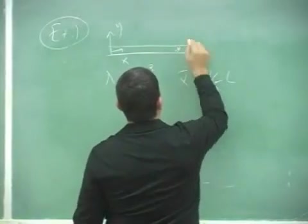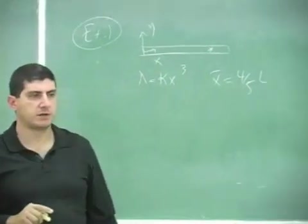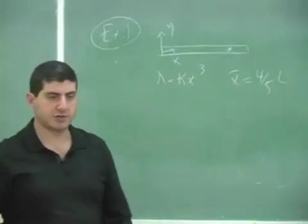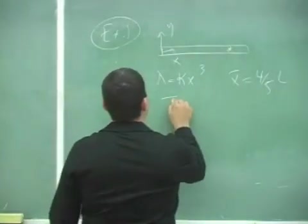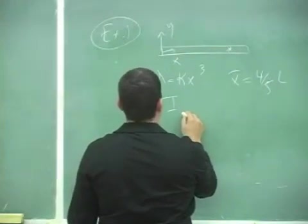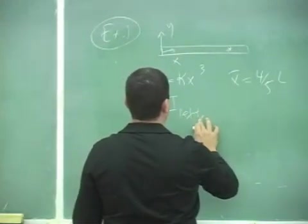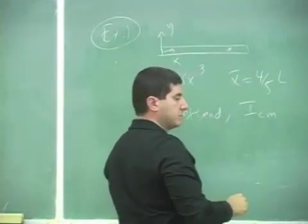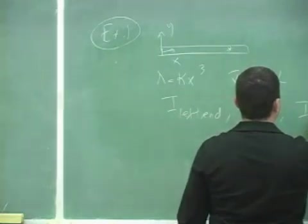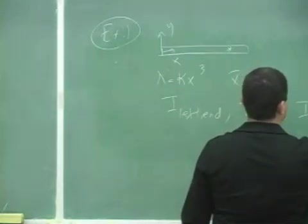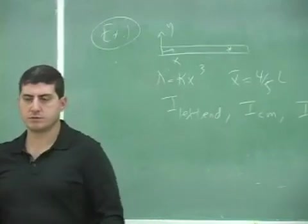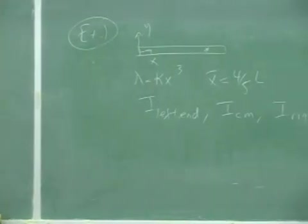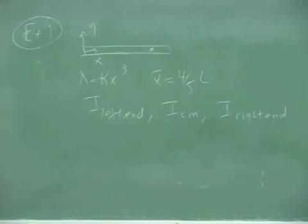So it was way out here. So now let's find the moment of inertia of this rod about the left end, the moment of inertia of the rod about the center of mass, and the moment of inertia of the rod about the right end. I about the left end, I about the center of mass, I about the right end.